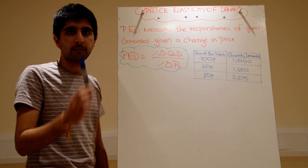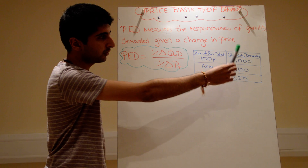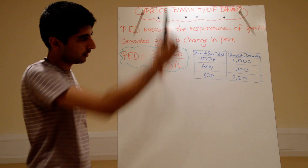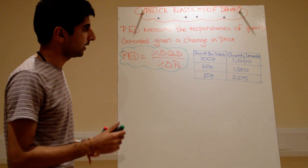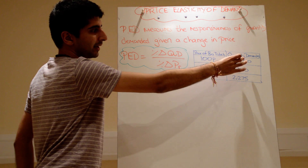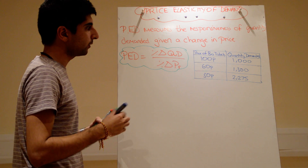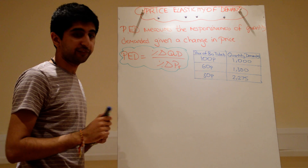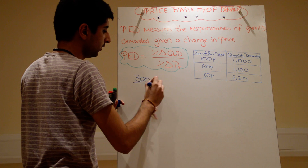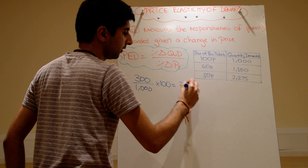Let's use this equation to make some calculations. I've got a table here — on the left-hand side the price of bus tickets, and on the right-hand side the quantity demanded of bus travel. As the price reduces, the quantity demanded of bus travel increases. Let's say the price has fallen from one pound (100 pence) to 60 pence. The percentage change in quantity demanded: the difference is 300, over the original value of 1,000, times by 100 gives 30 percent — a 30 percent increase in demand. The percentage change in price: the difference is minus 40, over the original price of 100p, times by 100 gives minus 40 percent.